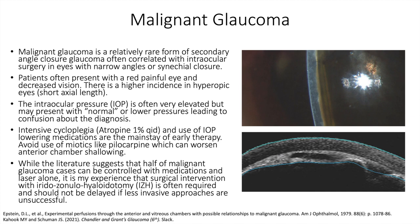Medical management includes intensive cycloplegia — we use atropine 1% QID — and use of IOP-lowering medications as the mainstay of early therapy. Avoid use of miotics like pilocarpine, which can worsen anterior chamber shallowing. Laser peripheral iridotomy should be completed when possible and may help distinguish the clinical picture from a primary angle closure process. The chamber often deepens in the setting of primary angle closure but does not with malignant glaucoma unless the vitreous face is also disrupted by focusing laser energy through the lens zonules and onto the anterior vitreous face.